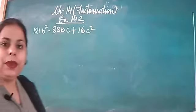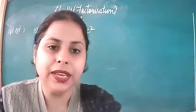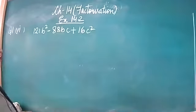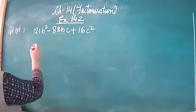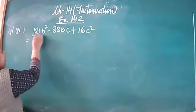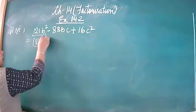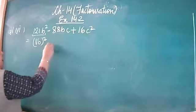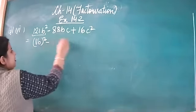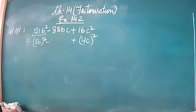How do we discuss this question? We have to find out which square is made. You can see that this is the square of 11b, and this is the square of 4c — so we have (11b) squared and (4c) squared.